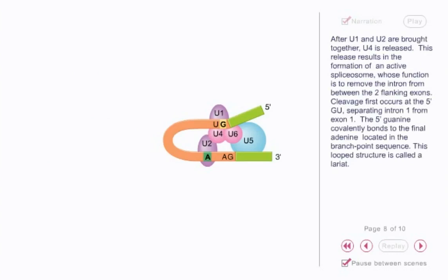After U1 and U2 are brought together, U4 is released. This release results in the formation of an active spliceosome, whose function is to remove the intron from between the two flanking exons. Cleavage first occurs at the 5' GU, separating intron 1 from exon 1.